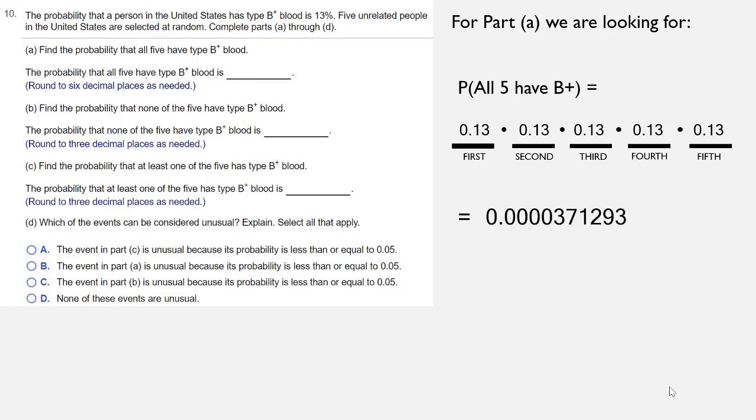We get 0.0000371293. The question asks to round to six decimal places, which is 0.000037. So that's your answer to part A.